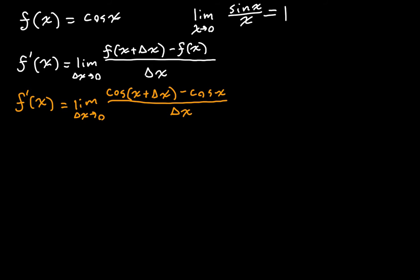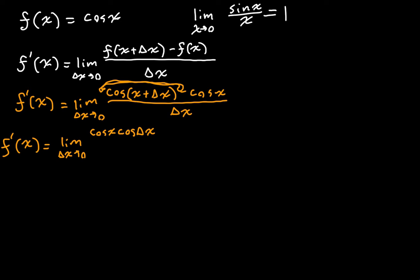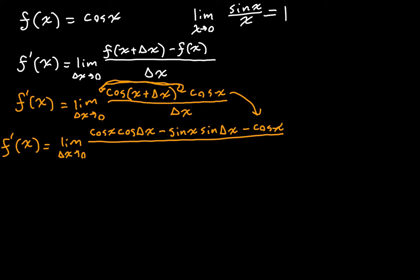What's another step we can take? Well, we can separate out this term using what we know about the angle addition identities from trigonometry. You should know these identities; if not, you should review those videos. So f prime of x is going to be the limit as delta x goes to zero of cosine of x times cosine of delta x minus sine of x times sine of delta x, minus cosine of x — that cosine of x comes down from here — and then we're dividing by delta x.